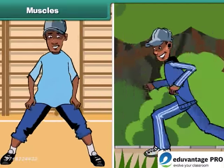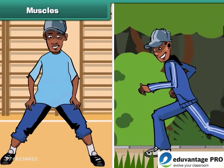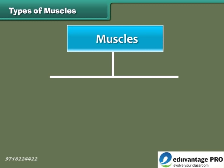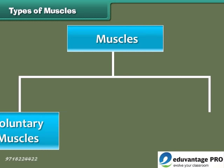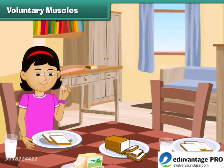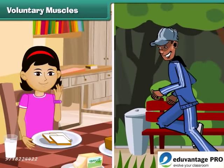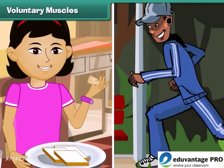Muscles along with bones help to give shape to the body. They also help the different parts of the body to make movements. According to the nature of their functions, muscles are of two types: voluntary muscles and involuntary muscles. Muscles that carry out actions according to our wishes or volition are called voluntary muscles. Movements brought about by voluntary muscles are called voluntary movements. Our arms and legs contain voluntary muscles.